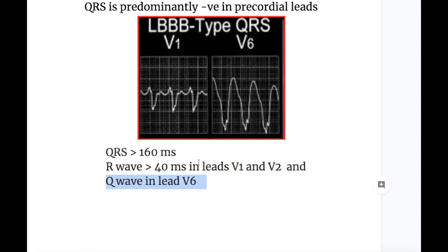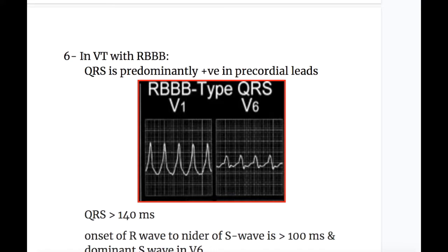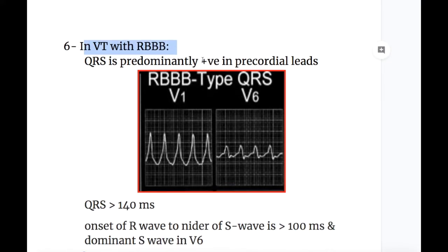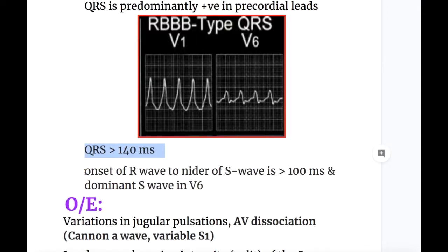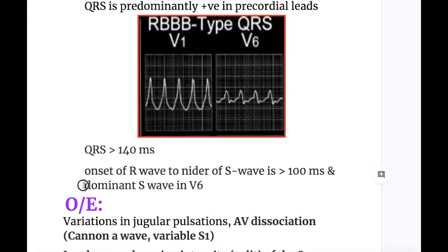Number six — in VT with right bundle branch block, QRS is predominantly positive in precordial leads, QRS is more than 140 milliseconds (compared to more than 160 ms in LBBB VT). In VT with RBBB, the onset of R wave to nadir of S wave is more than 100 milliseconds, and there is a dominant S wave in lead V6.